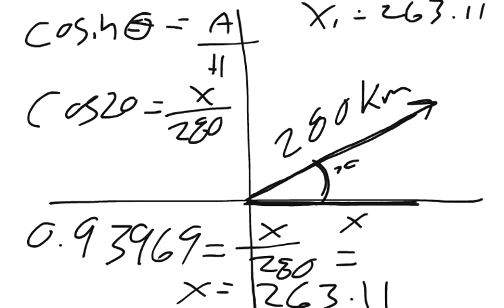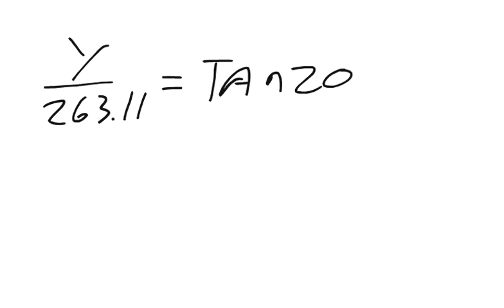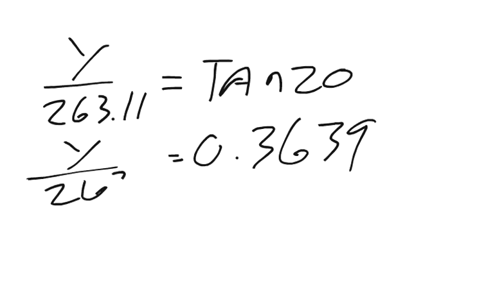Then I can use tangent, tangent is opposite over adjacent, and I can plug in 263.11 here. And I'm just making a right triangle, and I'm going to call this y. So, we'll say that y over 263.11 equals the tangent of 20 degrees. So you type in 20, you hit tangent, and it gives you the value of 0.3639. And you can use some algebra to figure out that y1 equals 95.77.